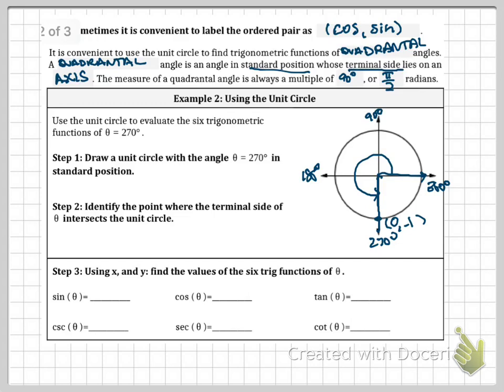So remember, we could label this as cosine and sine. Cosine is 0, sine is negative 1, or just remember which is X and which is Y. So sine of theta is just Y, so therefore sine of theta is negative 1 over 1. Cosine of theta is 0 over 1, or we can just say that's 0. Tangent of theta is Y over X, so therefore that is negative 1 over 0, and remember anything over 0 is undefined.